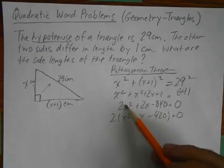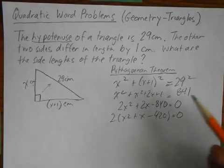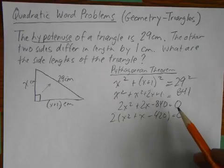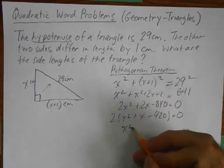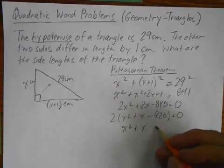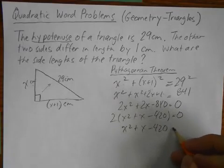So effectively, if I can factor out a constant, once it's in this form, I can work with a simpler version and just get rid of that constant. So I got X squared plus X minus 420 equals 0.